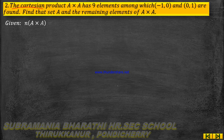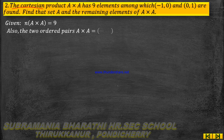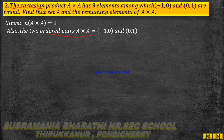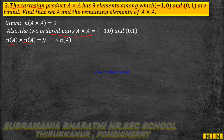So A×A is given. N(A×A) = 9 elements. The 2 ordered pairs given are (-1, 0) and (0, 1). Since N(A) × N(A) = 9, we get N(A) = 3, because 3 × 3 = 9.